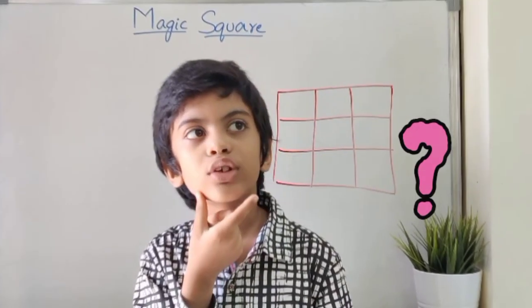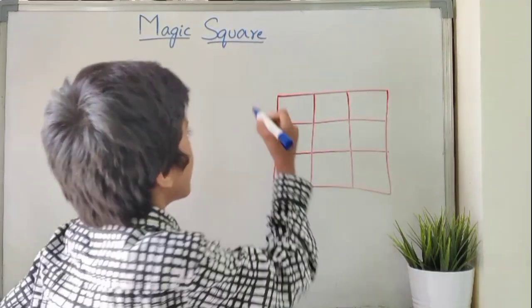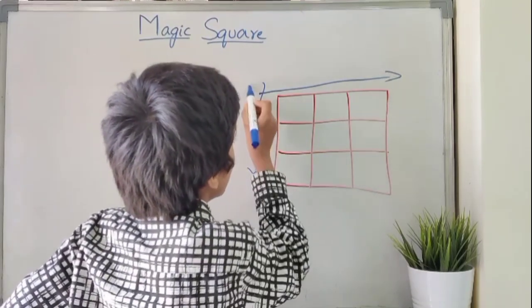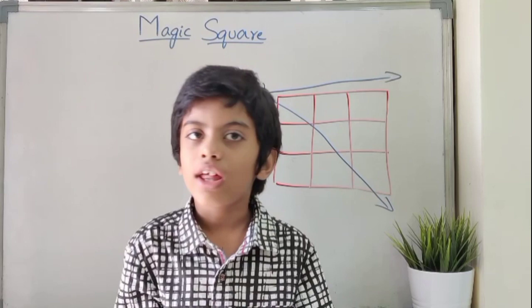What does it actually mean? It is a grid of numbers in which the numbers in each row, each column and each diagonal add up to the same sum known as magic sum.